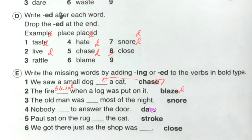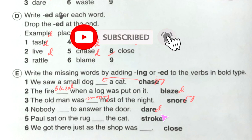Third sentence: the old man was dash most of the night — he was snoring, so the answer is snoring. Fourth sentence: nobody dash to answer the door — we add only d, so the answer is dared.